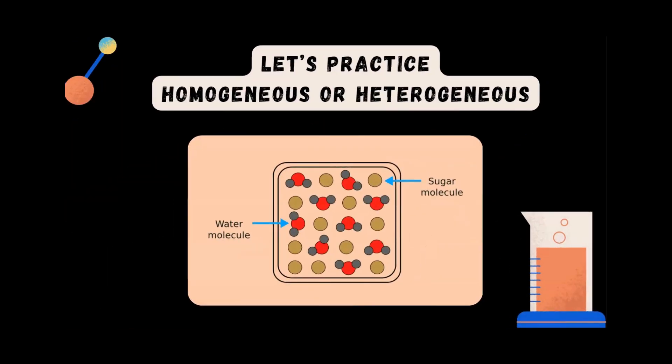Here we have a sample of sugar and water — is this homogeneous or heterogeneous? This sample is homogeneous. We have an even distribution of sugar and water, and it forms a pattern in this particular sample.